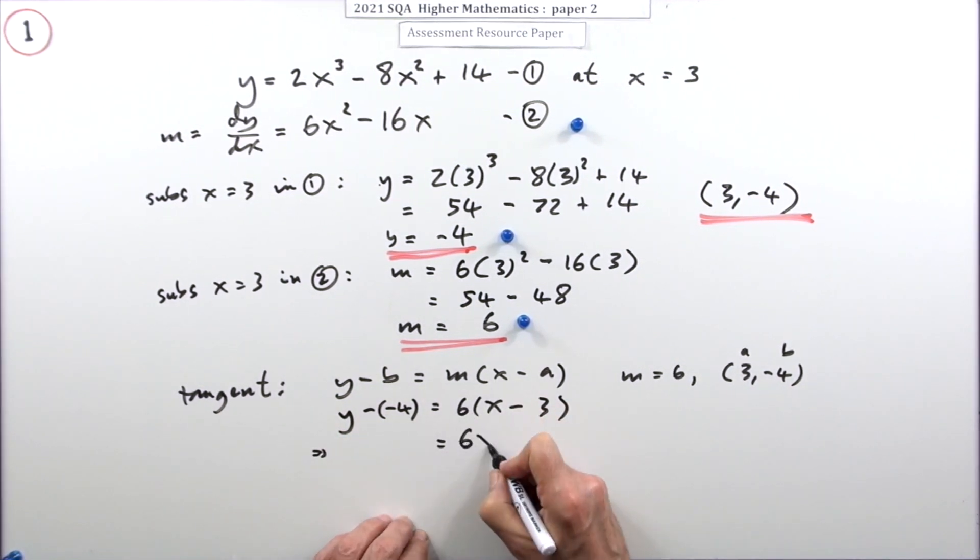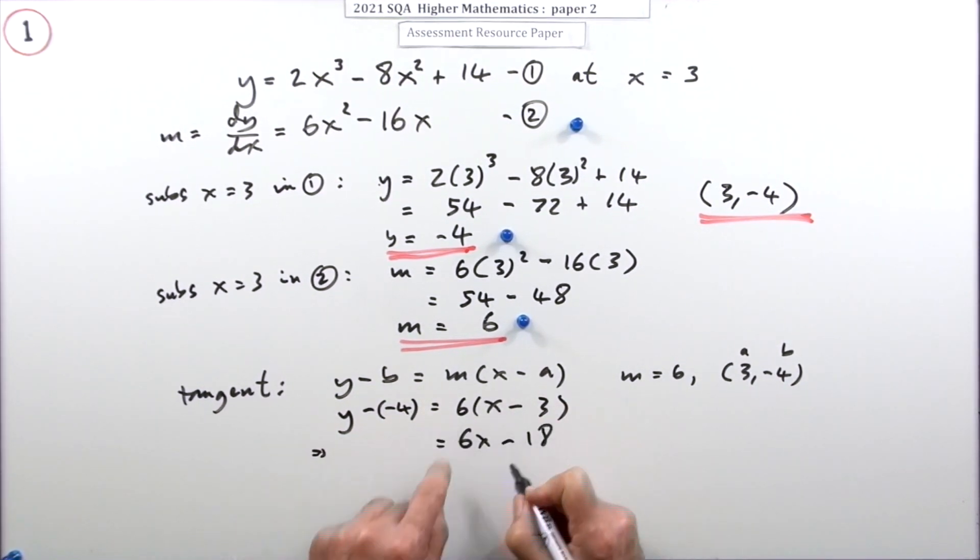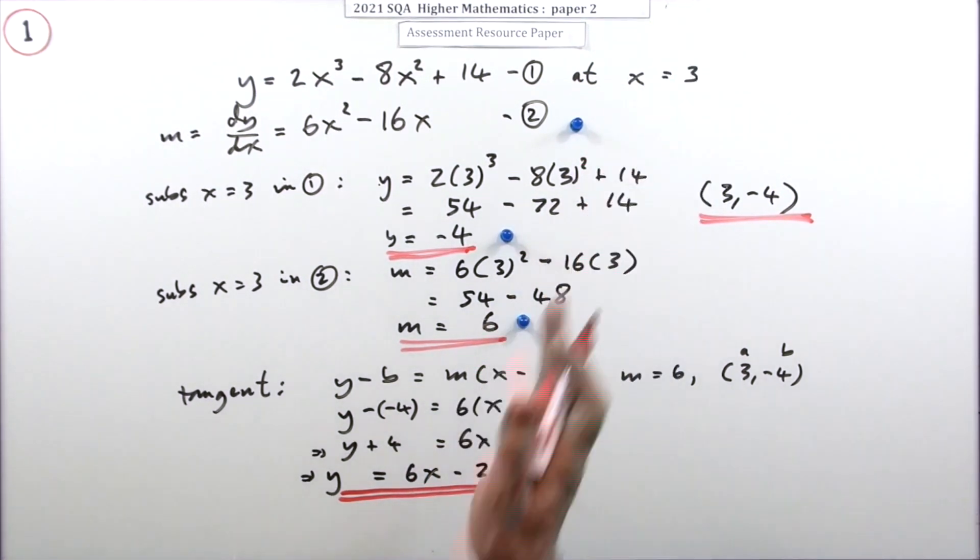So that's going to be 6x minus 18. If I'm doing that, might as well just put the four over here. Which means that y is going to be 6x minus 22, or any variation of that. I just think that's the best one. If you've just got a single y and there's no fraction here, that's a very nice form of the equation because you can visualize that really easily - cuts the y-axis at negative 22 with a gradient of 6.